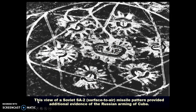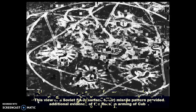We see a surface-to-air missile pattern, providing additional evidence of Russian and Cuban involvement. We knew it was the Russians because the technology looked like theirs, and it was technology the Cubans didn't have. Who else would be supplying a communist nation so close to the United States besides the Soviet Union?